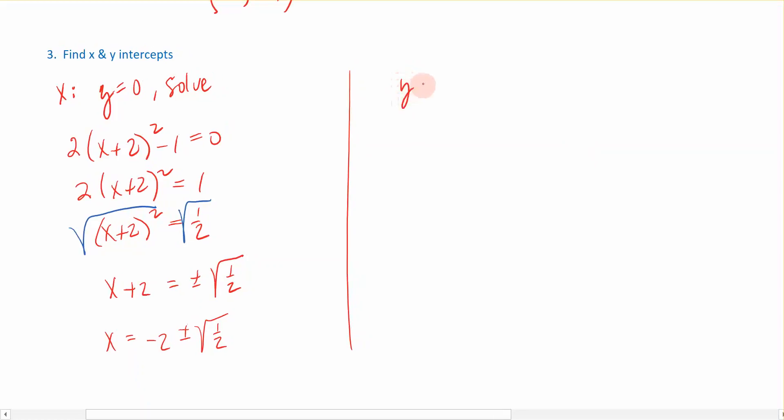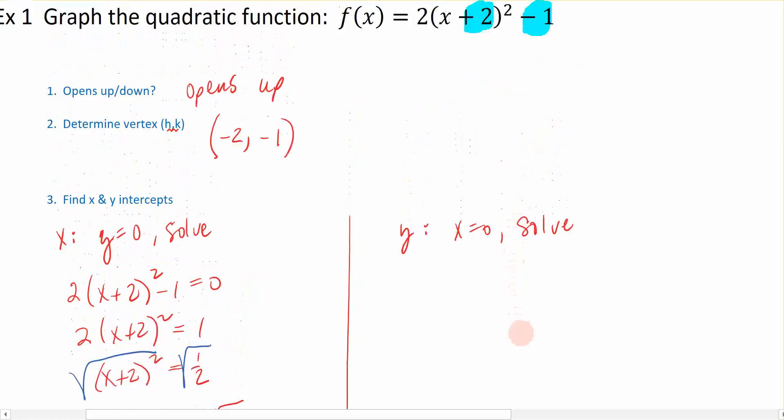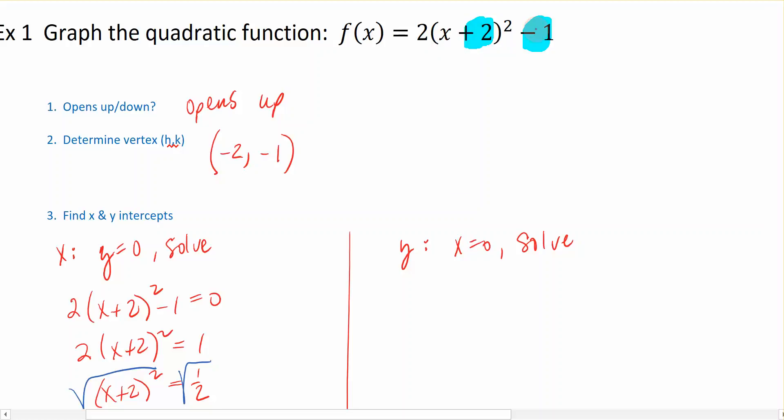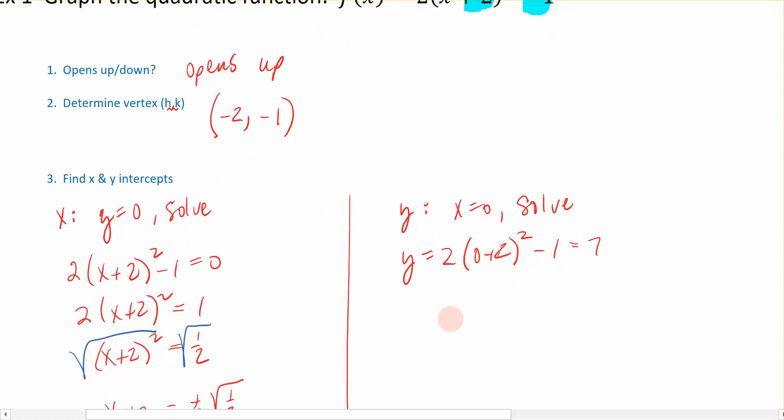Now to find the y-intercept, that's when we let x be equal to 0 in the equation, and we solve from there. So my equation is given up here, so I'm going to have y equals 2 times, and I'm going to replace x with 0, so 0 + 2 squared minus 1. So 0 + 2 is 2, squared would be 4, and 4 times 2 is 8, so 8 minus 1 is equal to 7. In other words, this crosses the y-axis at the point (0, 7).